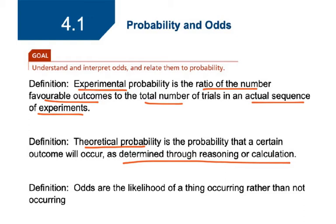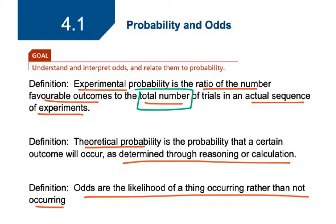Odds are slightly different. Probability talks about the total number of trials. Odds are the likelihood of a thing occurring rather than not occurring. So odds would be 50-50 for tossing a coin, while probability for tossing a coin would be 50 out of 100. That is the key difference — with probability we talk about the total number of outcomes, and with odds we talk about the favorable versus the unfavorable.